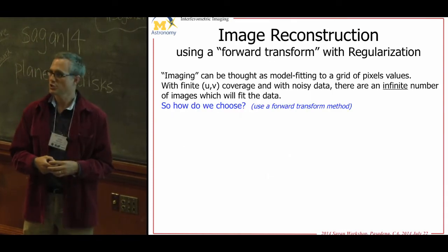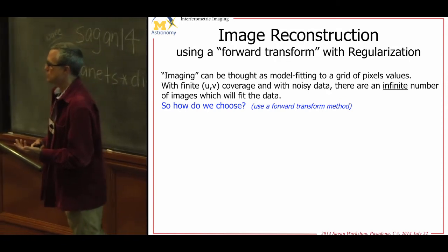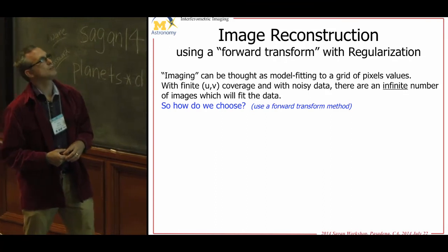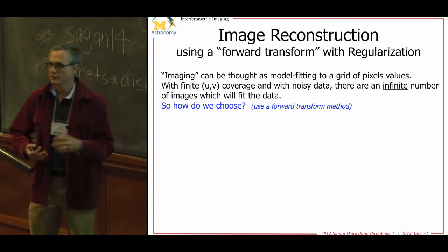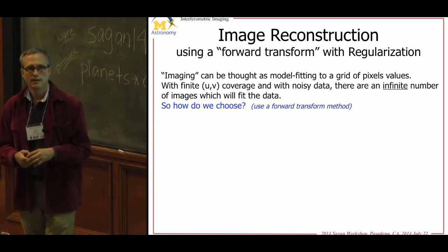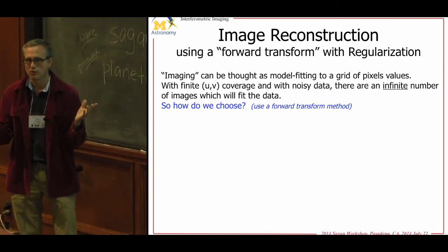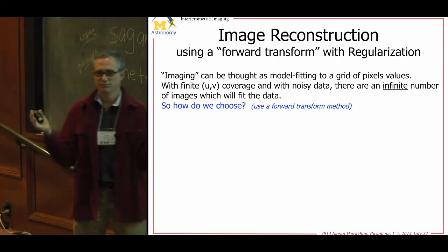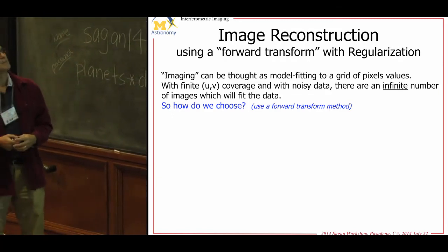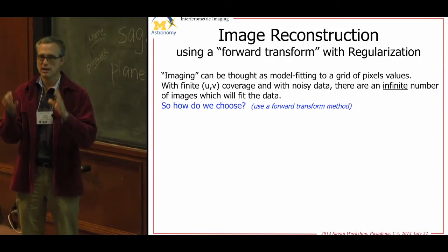A quick mention about image reconstruction: the clean technique is used in radio interferometry still today. But the modern way is really more like model fitting. With powerful enough computers, you treat everything as the forward problem rather than an inverse problem. You think of an image as a grid of pixel values — a model — and you fit that model to your data. You take a hypothetical candidate image, forward transform it, compare it to your data, and tweak things using optimization like Markov chain or Levenberg-Marquardt.